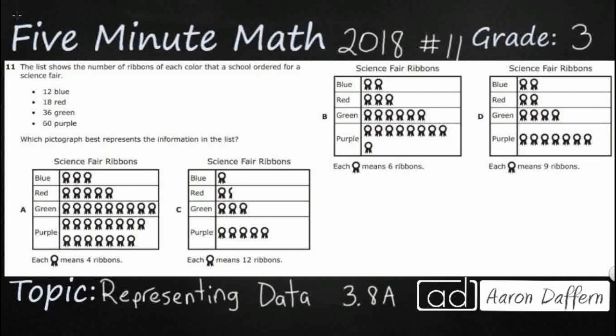So we have some ribbons here and the numbers we have are 12 blue, 18 red, 36 green, and 60 purple. We need to represent each of these on a pictograph and only one of these solutions is going to be correct for all of them.